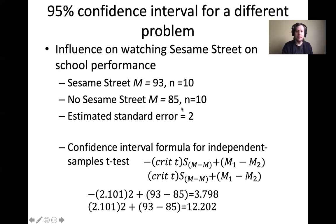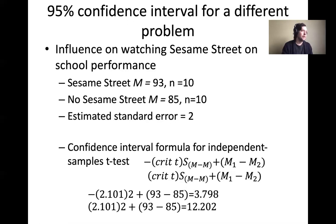We form our confidence interval: critical t times estimated standard error plus the difference between M1 and M2. The critical t is still negative 2.101 — degrees of freedom 18, two-tailed, alpha equals 0.05. Multiply by 2 (the estimated standard error), then add the mean difference: 93 minus 85 equals 8. For the lower bound you get 3.798, and for the upper bound you get 12.202.